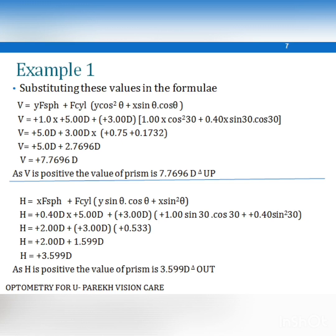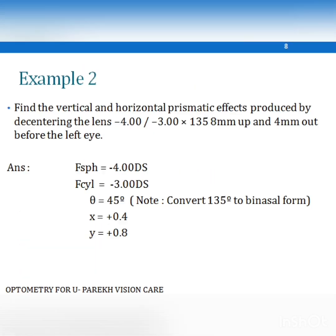Both the x and y components of direction are taken to be positive. For the vertical prismatic effect, substituting all components yields a final result of 7.7696 prism diopters in the base-up direction. For the horizontal prismatic effect, substituting the components gives a final result of +3.59 prism diopters, also in the base-up direction.